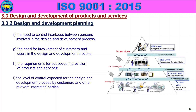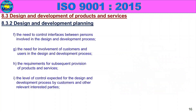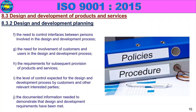The level of control expected for the design and development process by customers and other relevant interested parties — such as the customer, end user, or stakeholder. In one stage, you will determine what level of control will be provided. The documented information needed to demonstrate that design and development requirements have been met must be recorded. This completes the design and development planning information.